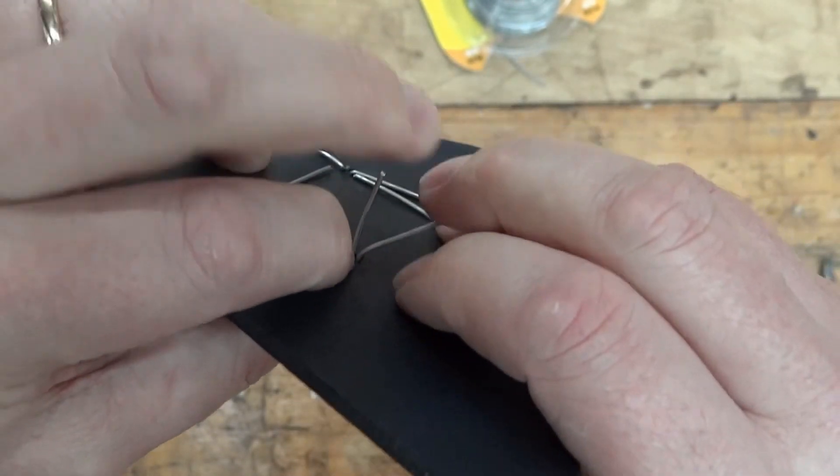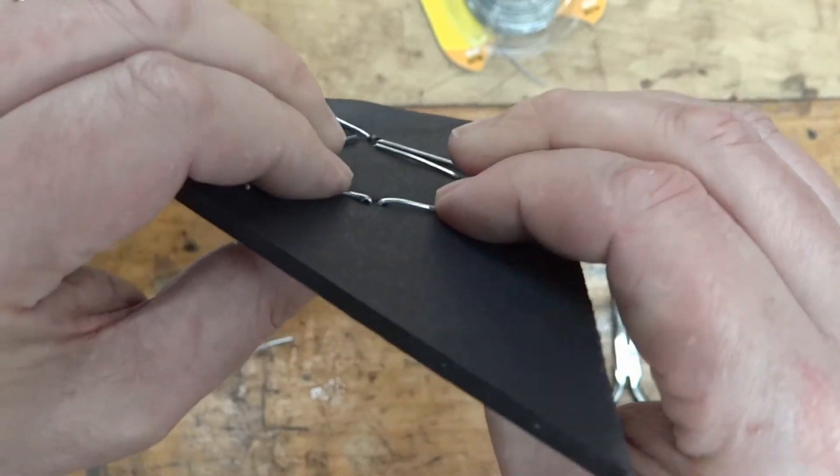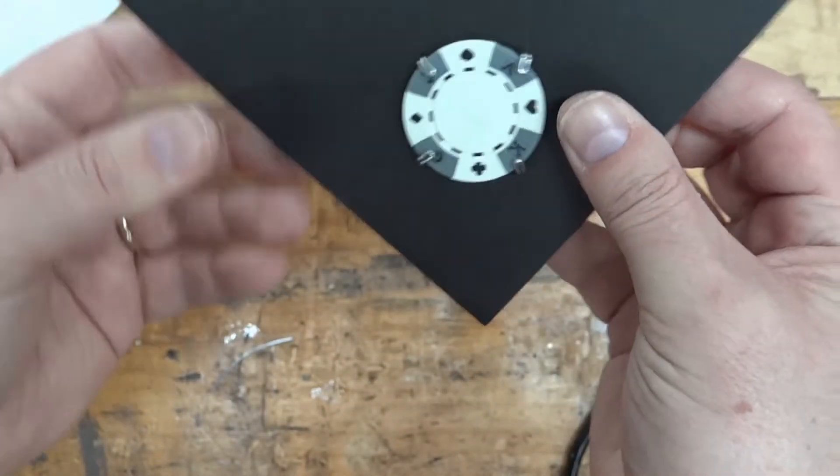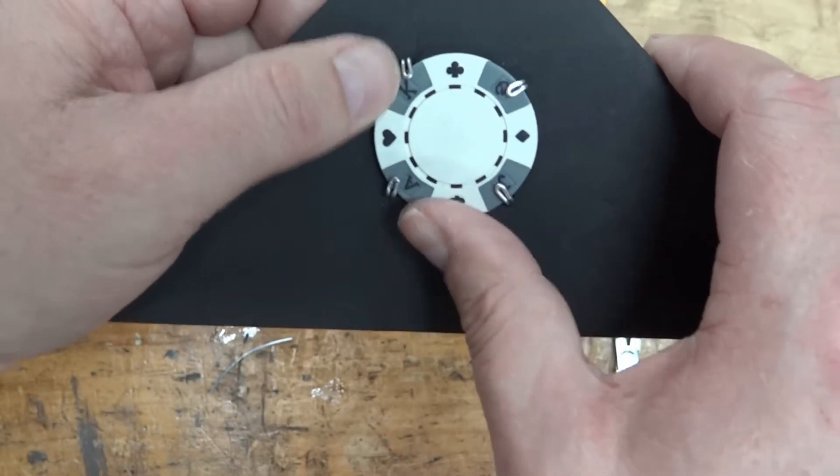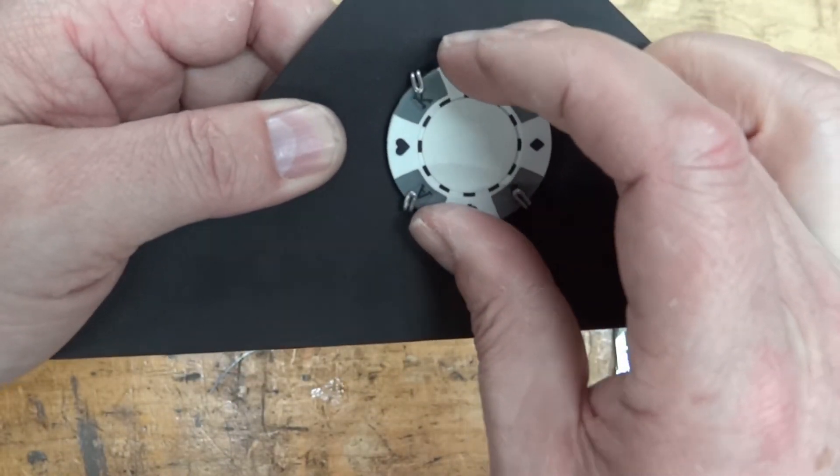I'm just pressing against the coin with my thumb so it's compressing the foam board a little bit. Right there you can see that the coin doesn't move. I can move it if I want but it's not going to move just from moving the piece around.